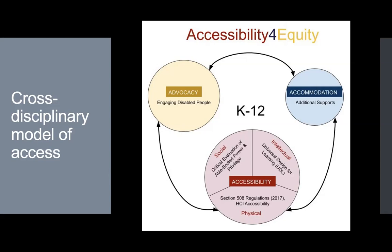The medium-sized circle, labeled advocacy, highlights the critical role that disabled people play in the process of access. For decades, one of the mottos of the disability rights movement has been nothing about us without us, meaning that initiatives dealing with disability must include disabled people. Moreover, critical pedagogue Paulo Freire argued that authentic liberatory education must be conducted in collaboration with oppressed students. The importance of including disabled people in the process can be seen in models of access that hail from both HCI and disability studies. By including the smallest of the three circles, labeled accommodation, the framework acknowledges that individual experiences are unique and some people and some instances may require accommodation in addition to accessibility, an idea that has been advanced by some disability studies scholars.